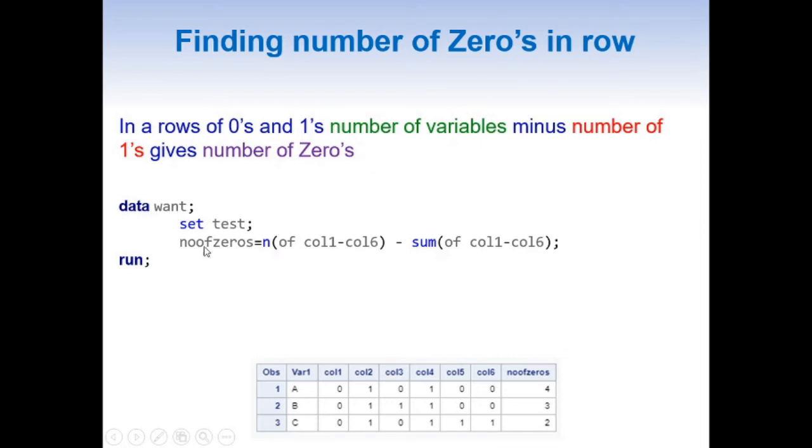So to find number of 0s, first we are going to do number of variables and then we are going to subtract it from sum of variables.